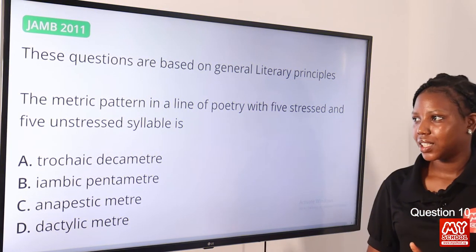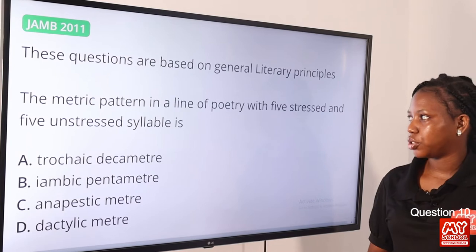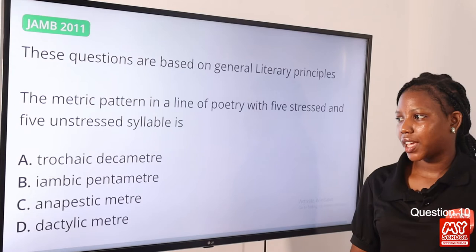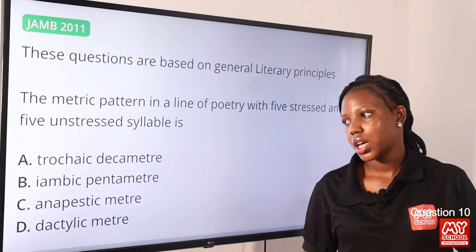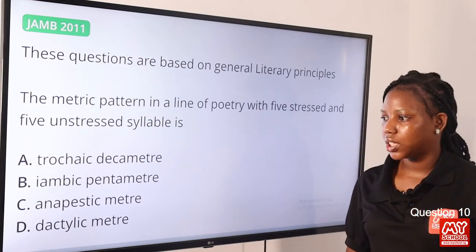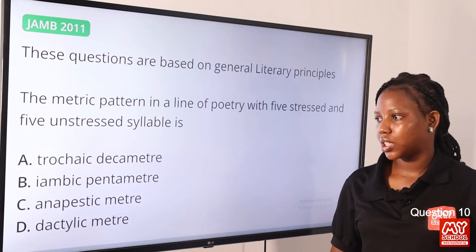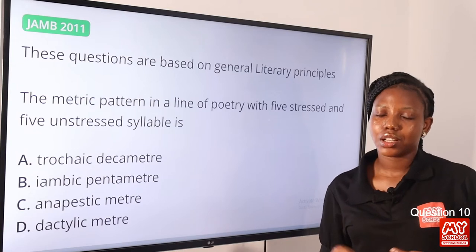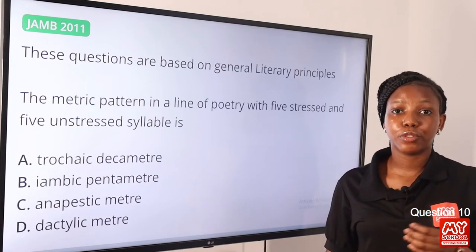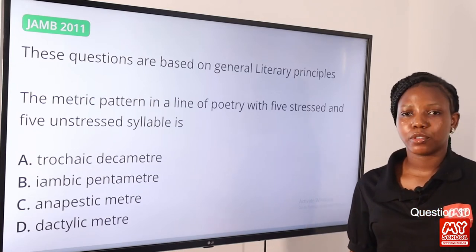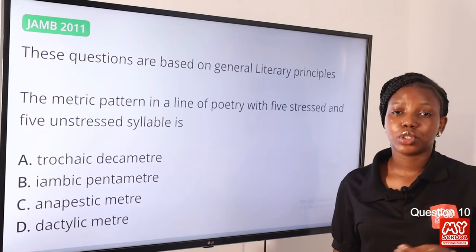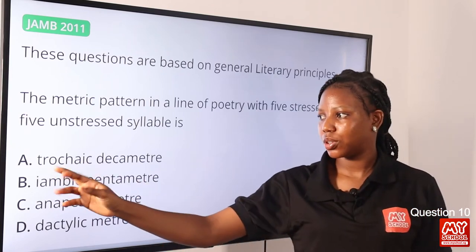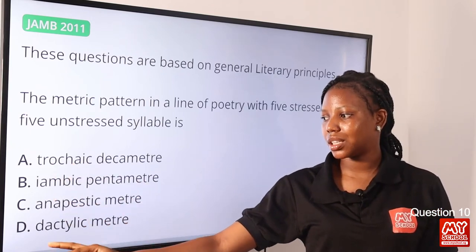Question 10. The metric pattern in a line of poetry with five stressed and five unstressed syllables is dash. Option A: trochaic decameter. Option B: iambic pentameter. Option C: anapestic meter. Option D: dactylic meter. The answer is option B. Let's discuss metrical feet. The types of metrical feet include trochaic, iambic, anapestic, and dactylic. The unit tells us how many feet: monometer is one, dimeter is two, trimeter, tetrameter, pentameter is five, decameter is ten.